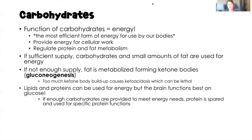Every function in our body needs energy at the cellular level. When we don't have enough energy from carbohydrates, our body is going to metabolize more fat for energy. That might sound great for weight loss, but when fat is metabolized we form ketone bodies, and eventually those build up causing ketonemia and ketoacidosis — the devastating, life-threatening effect of breaking down too much fat for energy, which you may recognize from diabetes mellitus. The process of breaking down fat for energy is called gluconeogenesis.